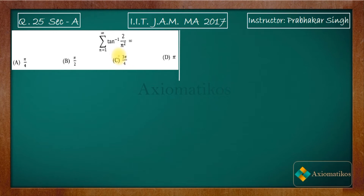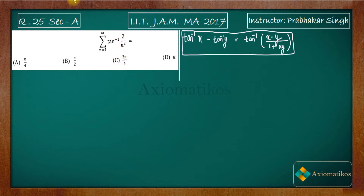First, I will write what is needed for this problem. Have a look at this formula that you learned in Class 12th if you are a CBSE student: tan⁻¹x - tan⁻¹y = tan⁻¹((x - y) / (1 + xy)). This formula from inverse trigonometry is going to help us in this problem.